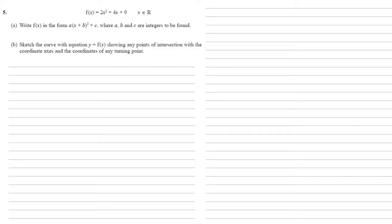Looking at the form we're aiming for, this is a completing the square question. When completing the square we need an x² without a coefficient before it, so we're going to factorize that 2 out. We get 2(x² + 2x + 9/2).